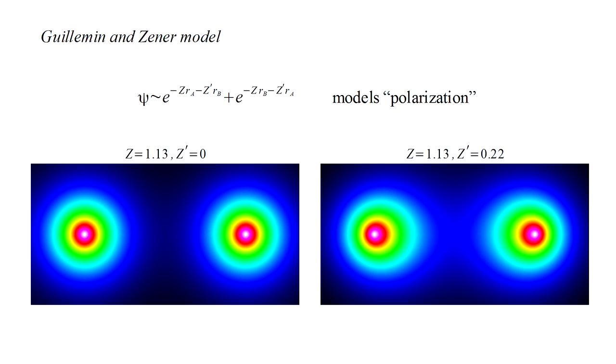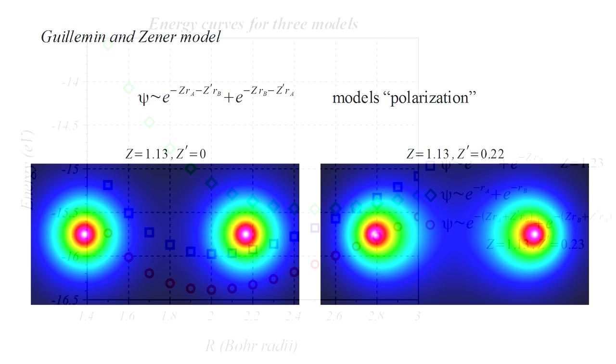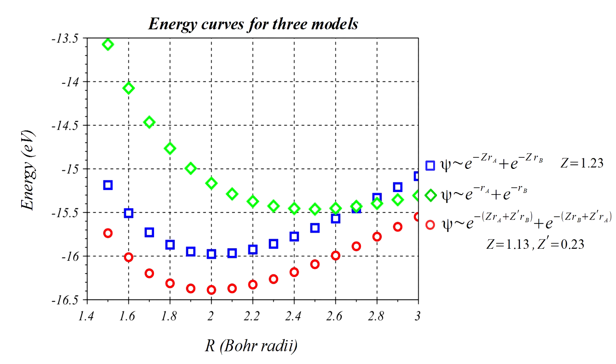If a spherically symmetric hydrogen atom is approached by a bare proton, we would expect the electron to be drawn or polarized towards the other proton.